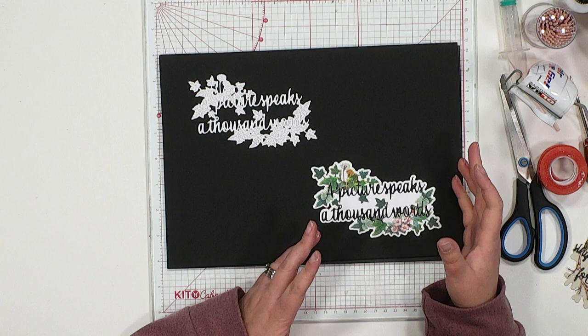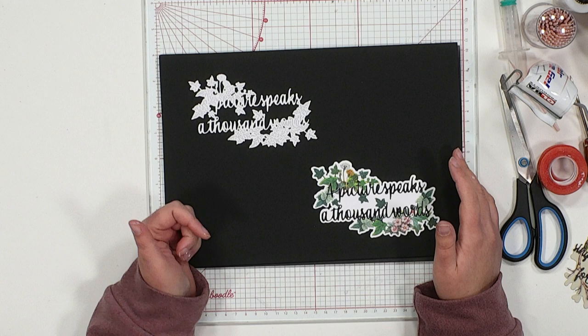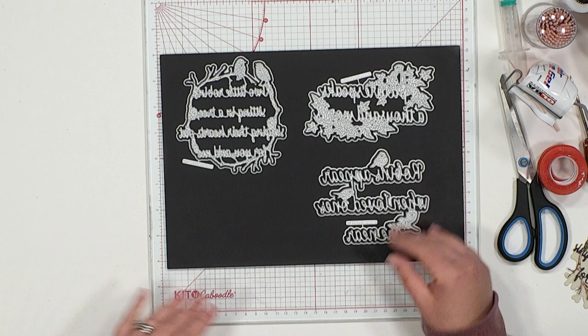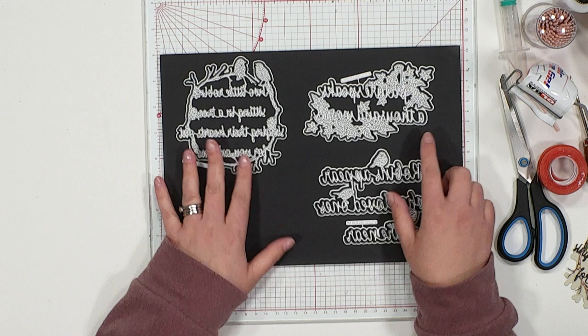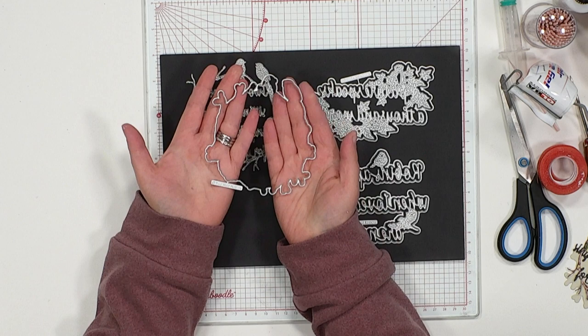You are going to be able to create gorgeous cards with this as the feature using your die cuts, using your dies from previous collections as well. Now, if we just take a look at the dies, you'll see really lovely large size to these. And we were mentioning about you've got your square, you've got your rectangle, and you've got your circle shape there. Perfect for your different card shapes.